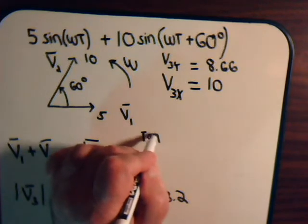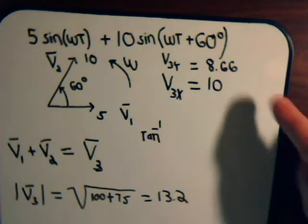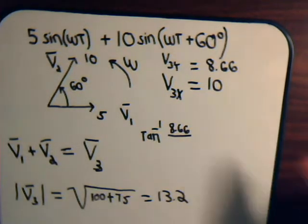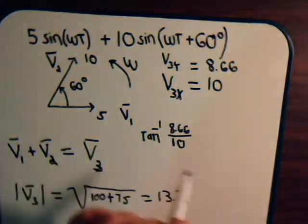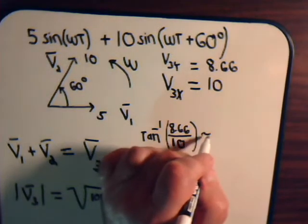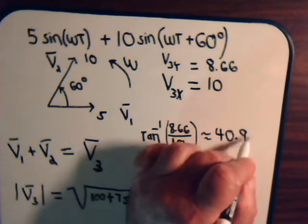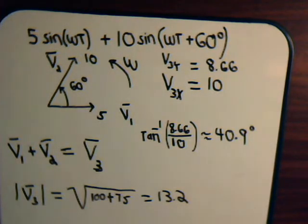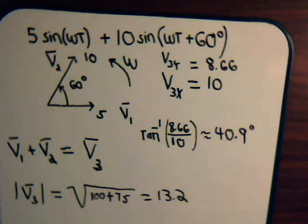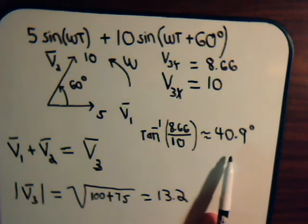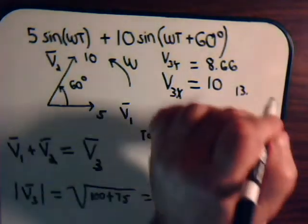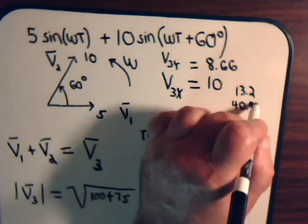We know how to find the angle: it is the inverse tangent of the y-component divided by the x-component of the vector, as we've done in previous videos. This gives us the inverse tangent of 0.866, which is very close to 41 degrees — we looked it up and it's 40.9 degrees. So when we add vectors V1 and V2 together, we get a new vector with magnitude 13.2 and an angle of 40.9 degrees from the horizontal axis.